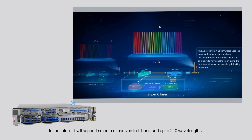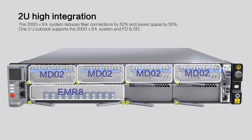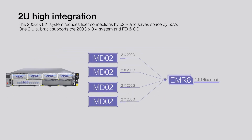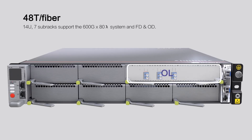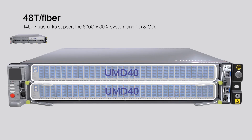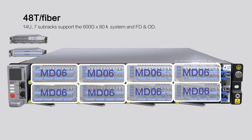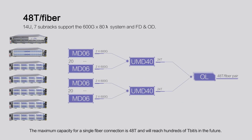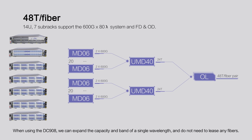Due to high integration, the 8-wavelength 200 gigabit system reduces fiber connections by 52% and saves space by 50%. One subrack supports the 8-wavelength 200 gigabit system in FD and OD. A 14U/7U subrack supports the 80-wavelength 600 gigabit system in FD and OD. The maximum capacity for single fiber connection is 48 terabits per second, and will reach hundreds of terabits per second in the future. This will meet DCI peak requirements over the next five years. With the DC908, capacity can be expanded per wavelength and per band without replacing any fibers.